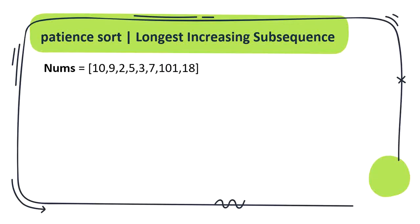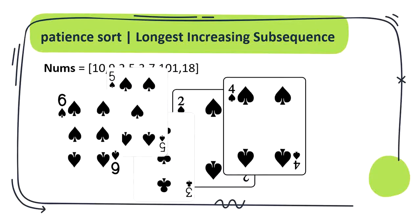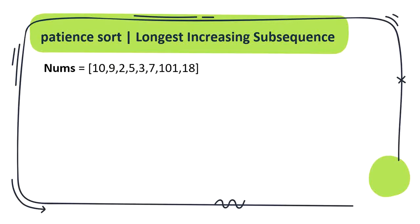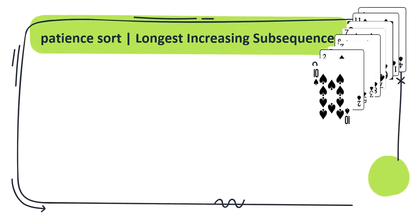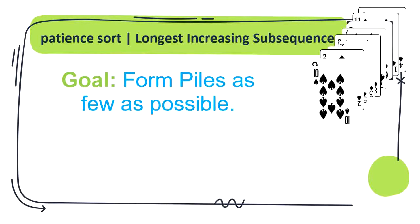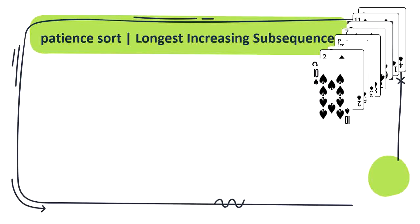Patience sorting is a sorting algorithm inspired and named after the card game patience. So first let us understand the game to understand the intuition of our algorithm. We are given a pile of cards. Our goal is to form piles as few as possible.